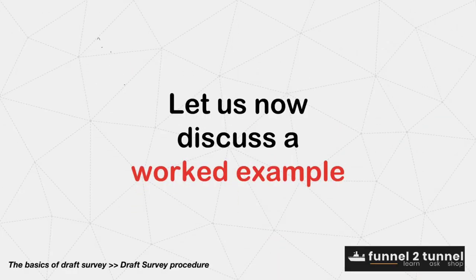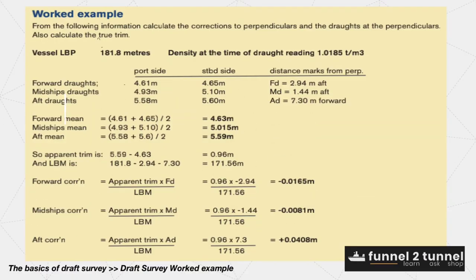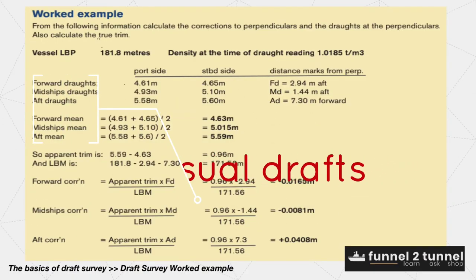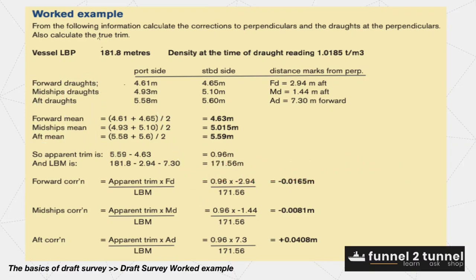Let us now discuss a worked example. The chief officer has obtained the forward, mid, and aft drafts as shown on your screen. Both port and starboard side marks are given. Mean drafts are calculated by taking the average of both side drafts for forward, midship, and aft drafts. Let us calculate the apparent trim by subtracting the mean aft draft from the mean forward draft.